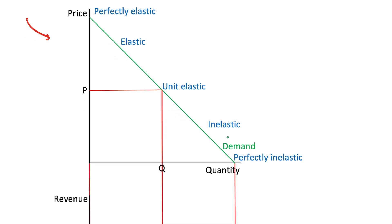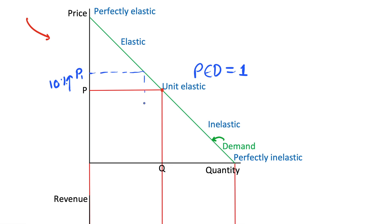As we see in green, we have a demand curve here, and we can pick out the midpoint of this demand curve — this dot in the middle where we have price P and quantity Q demanded. At this point we have unit elasticity, so our price elasticity of demand, PED, is equal to 1. This means that any percentage change in price will have an equal percentage change in quantity demanded.